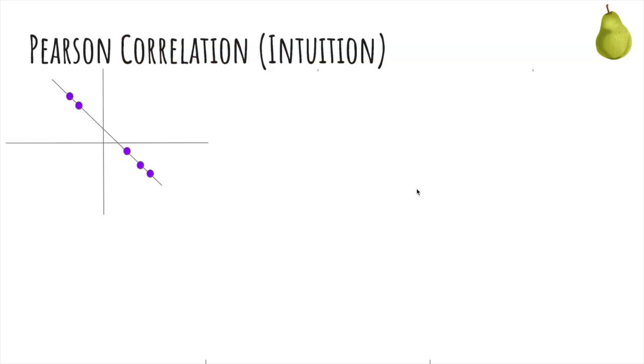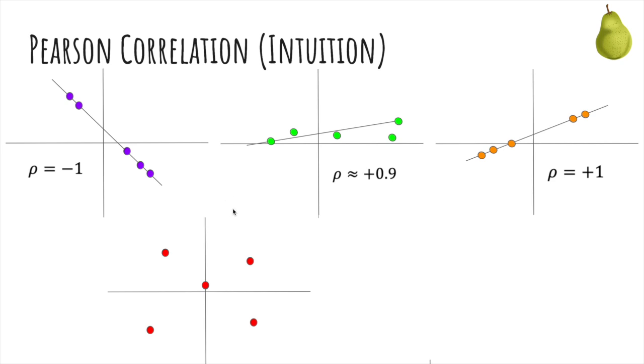So let's see some correlations. For this plot, the correlation is negative one. There's a perfect negative linear relationship. For this one, it's a positive relationship, but it's not perfect, but it's pretty good. So maybe it's around 0.9. Here, it's a positive perfect relationship. So it's plus one. Here, they look kind of independent. So the correlation will be zero. And here, it's negative, but not very strong. So maybe it's like negative 0.6.